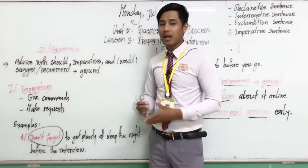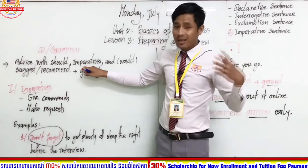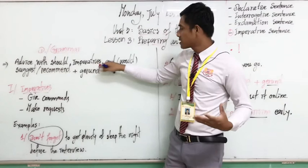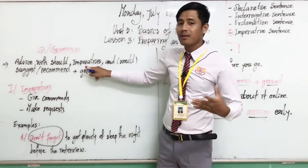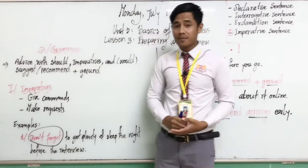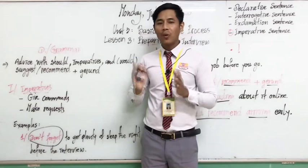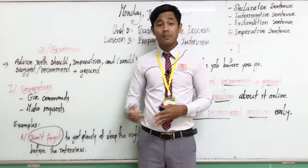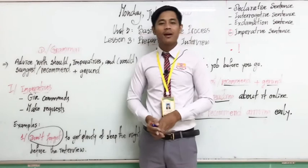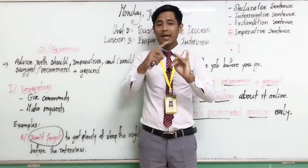Today's main focus is imperatives and 'would suggest/recommend' plus verb-ing. First, let's talk about types of sentences. There are two kinds of sentences in English. The first is sentence by structure, which is divided into four types: simple sentence, compound sentence, complex sentence, and compound-complex sentence.